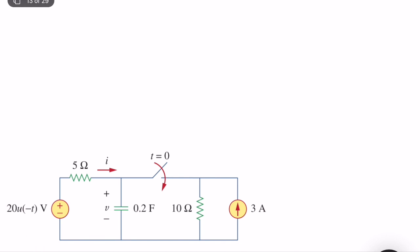In this case we have u(−t), which means v_s is equal to 20 volts for t less than or equal to 0, and v_s equals 0 volts when t is greater than 0. This is the key idea we need to be careful about when analyzing the circuit.